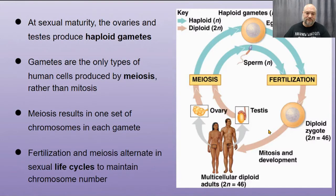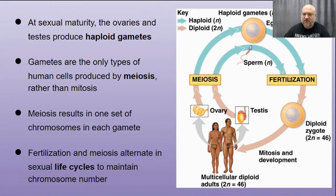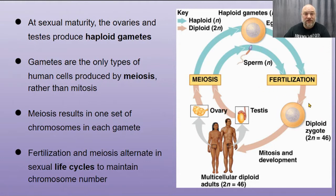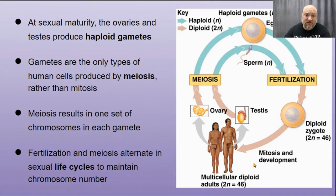At sexual maturity the ovaries and testes produce haploid gametes through meiosis. Fertilization combines them back to the normal amount of DNA, and then we grow up and start the life cycle over again. This is why sexually reproducing organisms must go through meiosis — if mom and dad each passed on 46 chromosomes, the kids would have 92, then more and more. So every time you have a child you can only pass on half of your chromosomes, one copy of every gene.